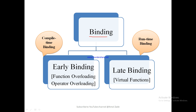What do we mean by binding? Binding refers to the process of converting identifiers — like member functions or data members — into addresses. Binding is done for every data member and member function. The matching of a member function call to the function available in a class takes place either at compile time or at runtime.